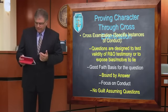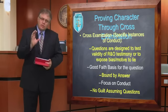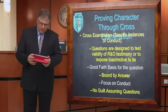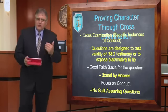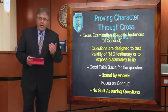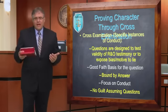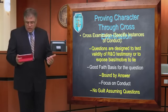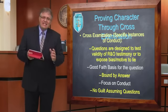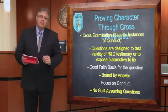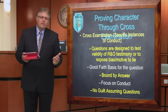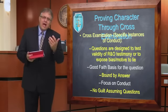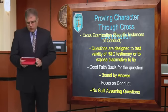You can prove specific instances of conduct by asking questions on cross-examination to attack the validity of the reputation or opinion testimony. When I ask these questions, they're designed to test the validity of the earlier testimony. I've got to have a good faith basis to ask the question — I can't make stuff up. I've got to have some reason to think that the fact actually exists, and I am bound by the answer the witness gives. I can focus on the conduct, but I can't ask a guilt-assuming question. The idea is to test the validity of the reputation or opinion testimony — to place in context how much weight the jury should give to that particular testimony.